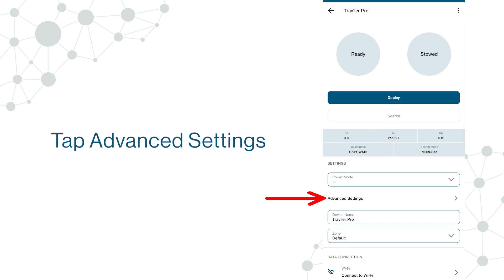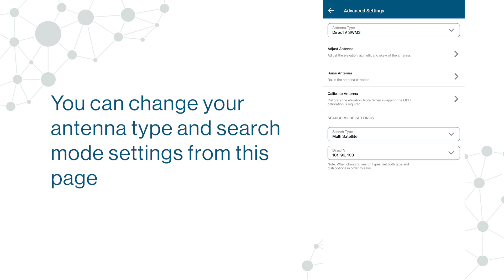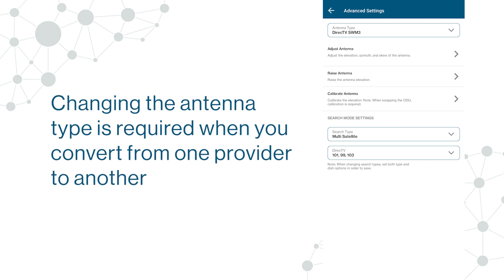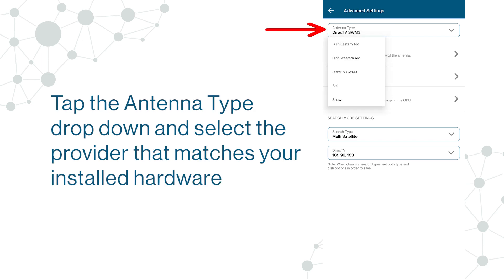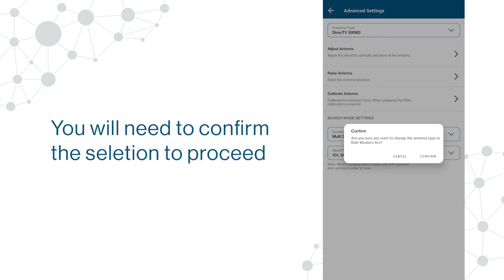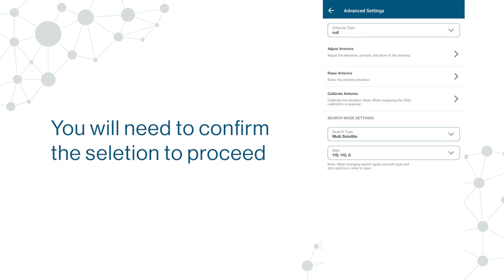Tap Advanced Settings. You can change your antenna type and search mode settings from this page. Changing the antenna type is required when you convert from one provider to another. Tap the antenna type drop-down and select the provider that matches your installed hardware. You will need to confirm the selection to proceed.